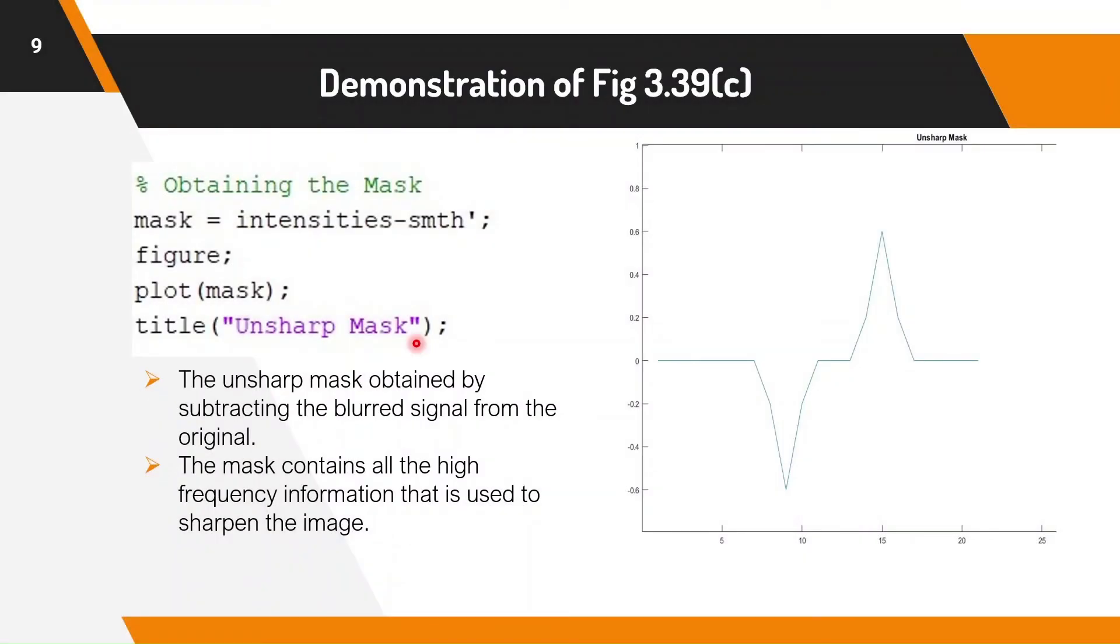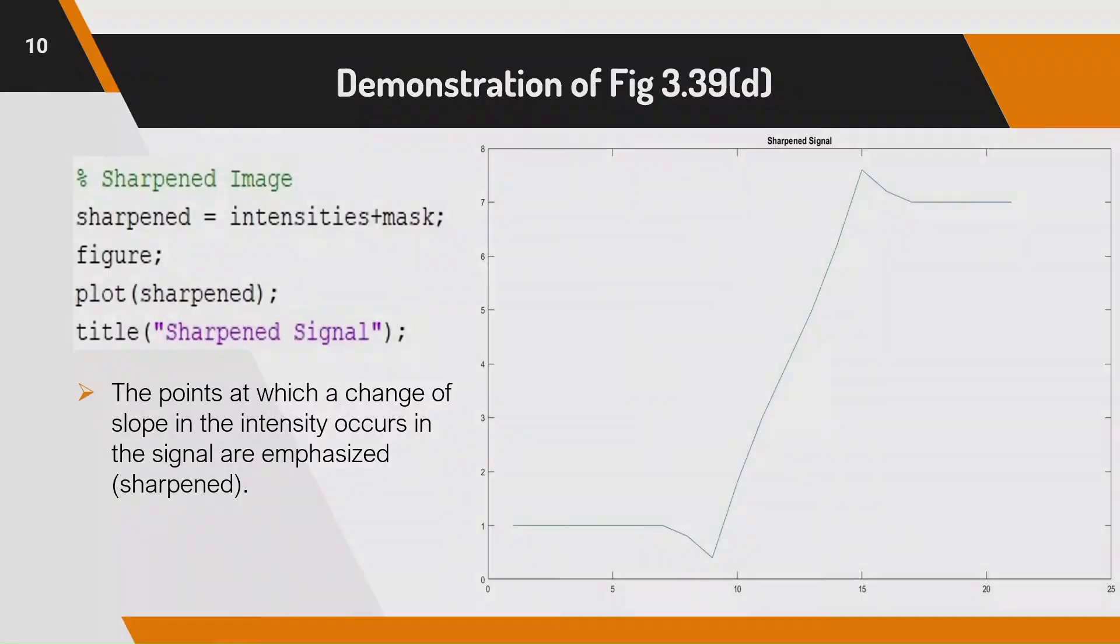This is the unsharp mask obtained by subtracting the blurred signal from the original. The mask contains all the high frequency information that is used to sharpen the image. Now this is the final sharpened result obtained by adding the mask to the original signal. The points at which the change of slope in the intensity occurs in the signal are now sharpened.